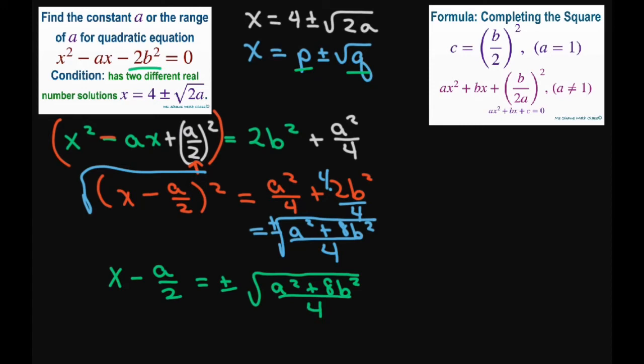And solving for x, remember we're trying to make it look like something like that. So I'm going to have x equals A divided by 2 plus or minus square root of A squared plus 8b squared divided by 4.